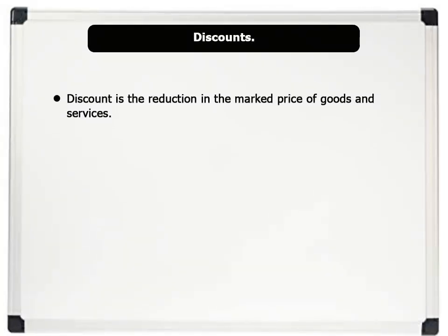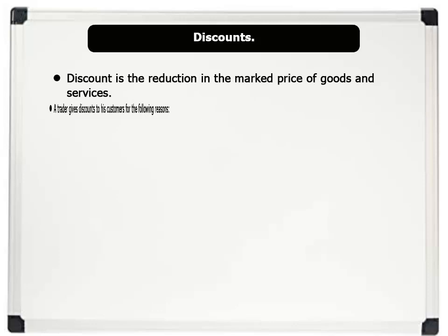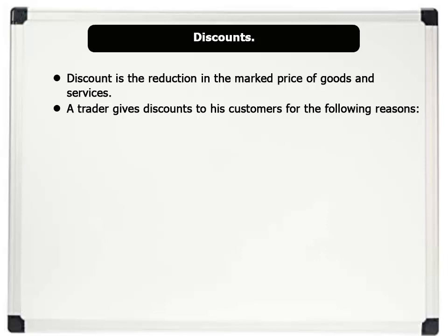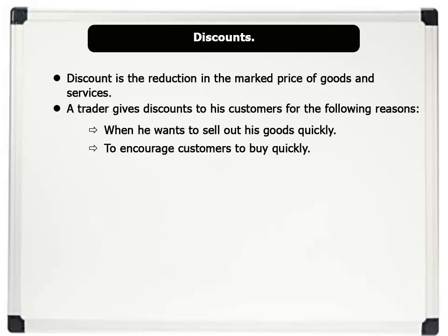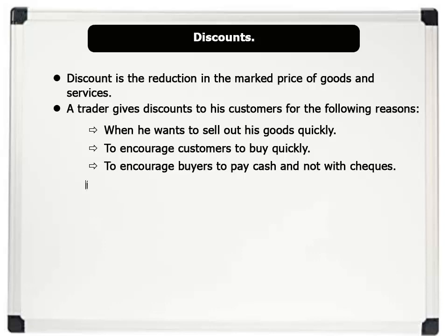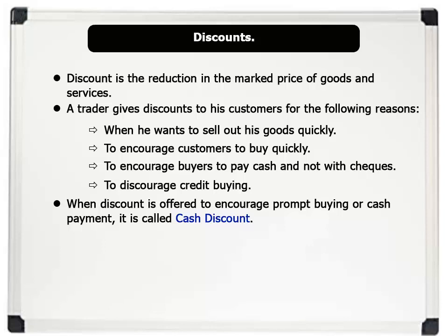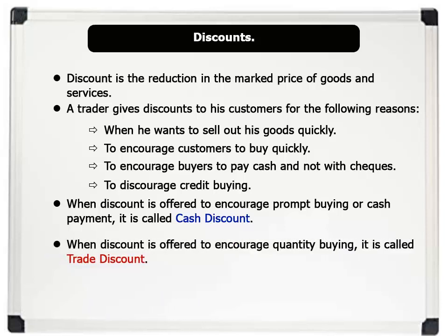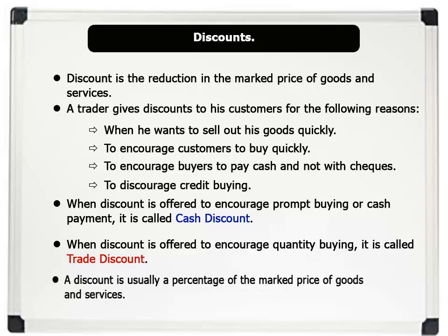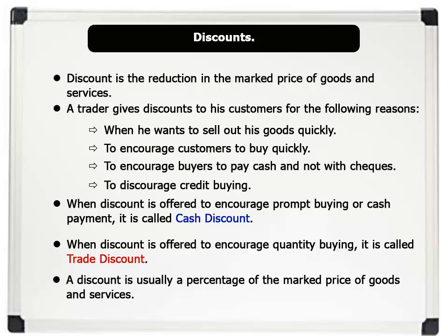Discount is the reduction in the marked price of goods and services. A trader gives discounts to his customers for the following reasons: 1. When he wants to sell out his goods quickly. 2. To encourage customers to buy quickly. 3. To encourage buyers to pay cash, and not with checks. 4. To discourage credit buying. When discount is offered to encourage prompt buying or cash payment, it is called cash discount. And when discount is offered to encourage quantity buying, it is called trade discount. Remember, a discount is usually a percentage of the marked price of goods and services.